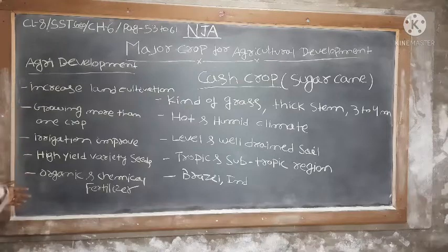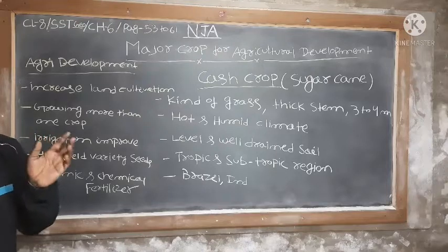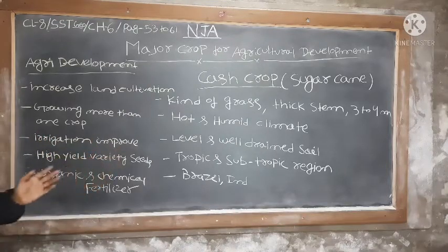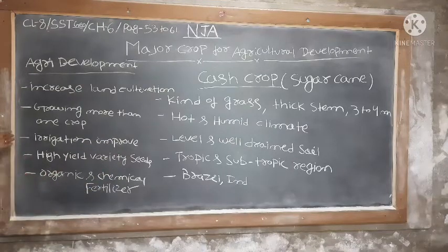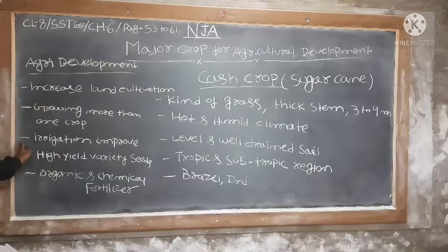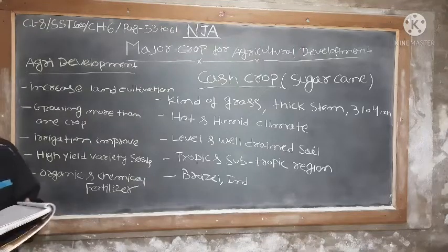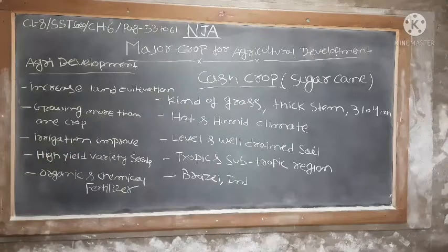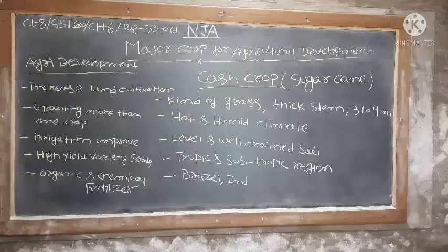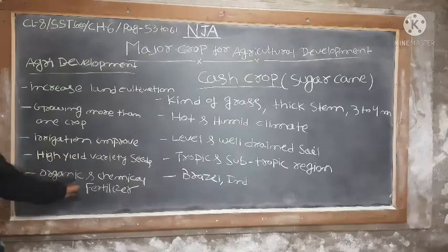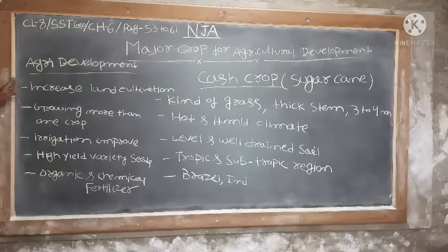We can increase agriculture development by growing more crops in a year. For example, if you grow only rice, it takes 3 to 4 months, so you can use that land for other crops too. We also need to improve irrigation — using pumps, rivers, and canals. High yield variety seeds should be used. Compared to other seeds, high yield variety seeds, along with organic and chemical fertilizers, help increase agricultural development.